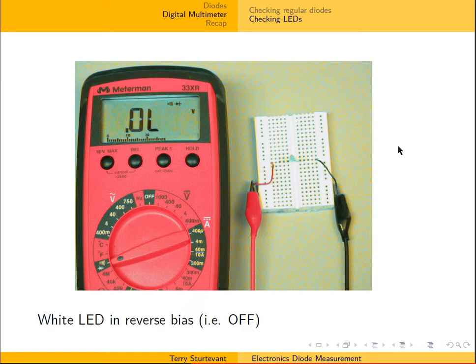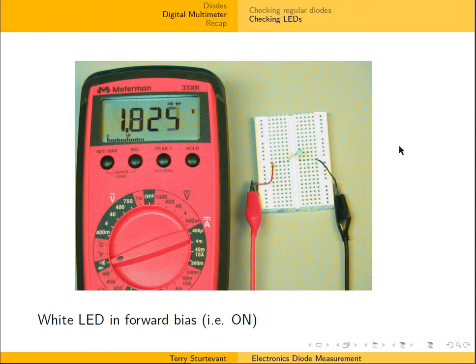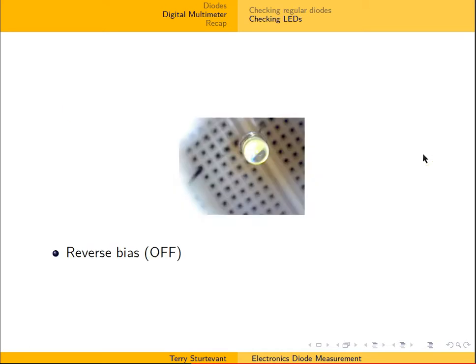Now we go to a white LED, which is higher energy than the green. Again, in reverse bias and in forward bias — you notice that the voltage is again higher than it was for the green LED. And again, here it is off and on.